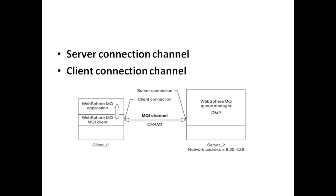The channel name must be the same at both the client end and the server end — this is very important. Until now, whatever channels you have learned are all unidirectional; they go from A to B and cannot flow from B back to A. The server connection and client connection channels are bidirectional, so they can be used as an example of a bidirectional channel.